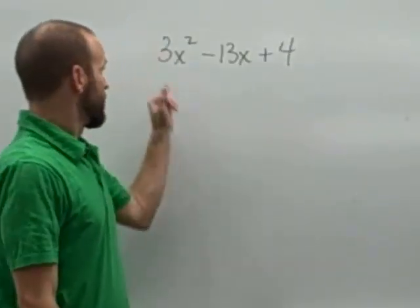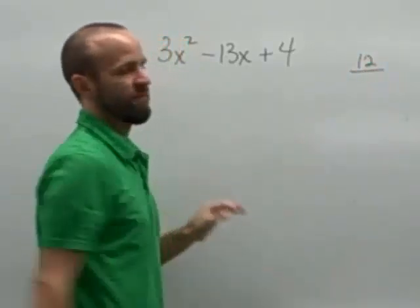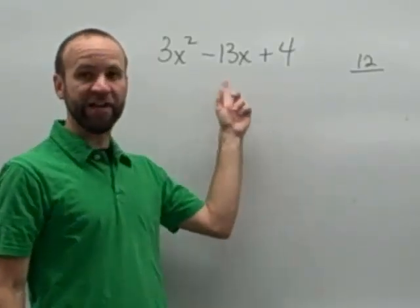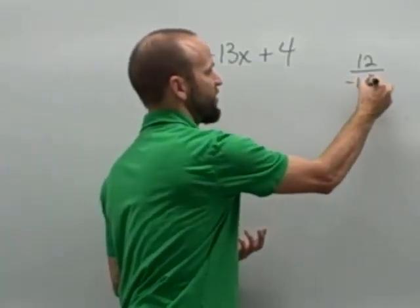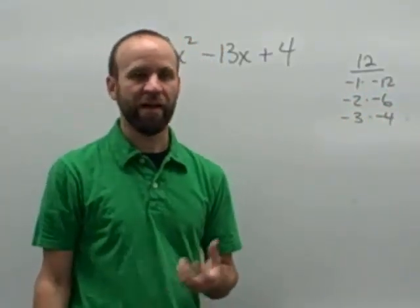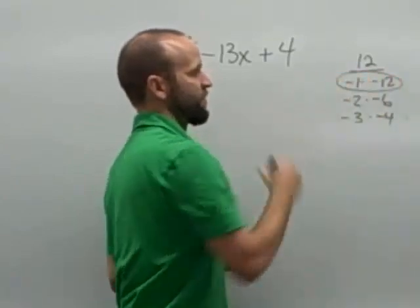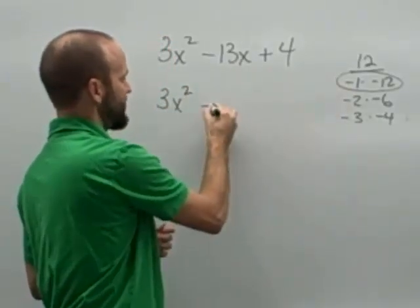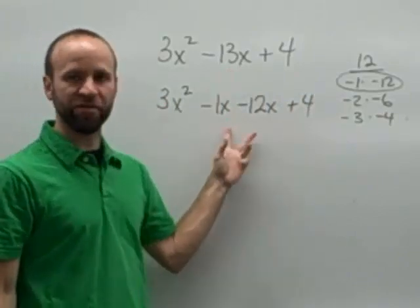Let's try that again. The leading coefficient is not 1, so I'm going to start by multiplying 3 and 4, which gives me positive 12. So we're going to look at factor pairs of positive 12, meaning two positive or two negative factors. We're looking for a negative sum, so I'll focus on factor pairs of two negative factors: negative 1 times negative 12, negative 2 times negative 6, or negative 3 times negative 4. Only one of those has a sum of negative 13, and that's the first one. So we rewrite the trinomial replacing negative 13x with negative 1x and negative 12x, keeping the first and last terms the same.